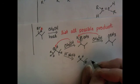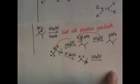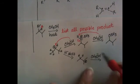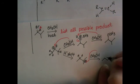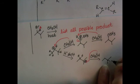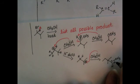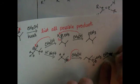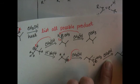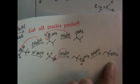That carbocation can also be attacked by methanol, the weak nucleophile. And that'll give us this intermediate, which will then react with another methanol to give us this product.